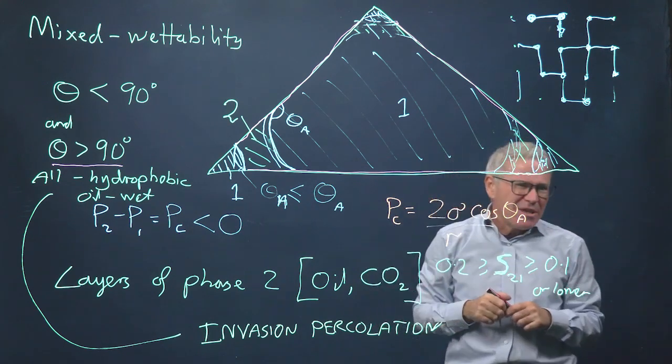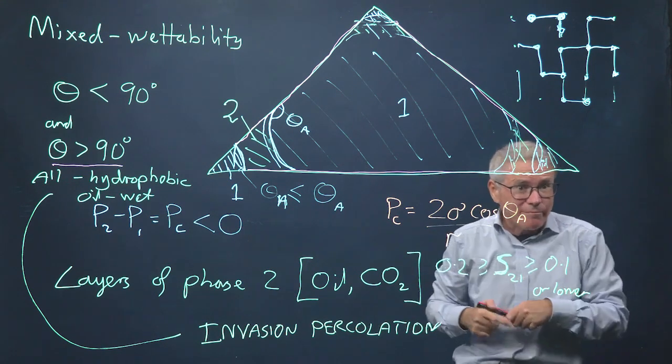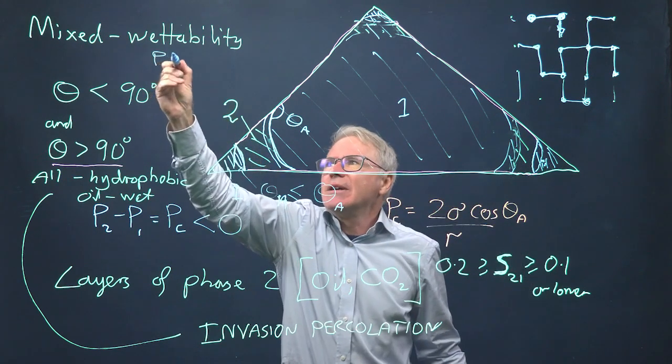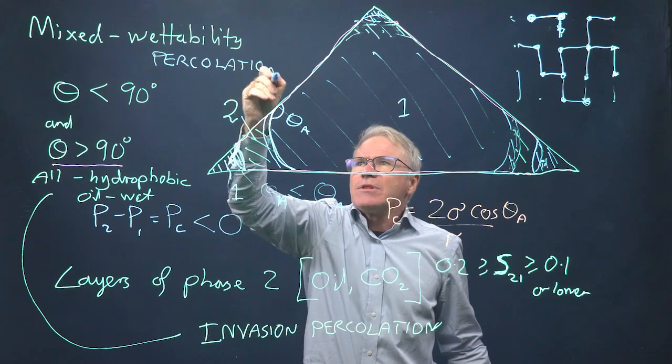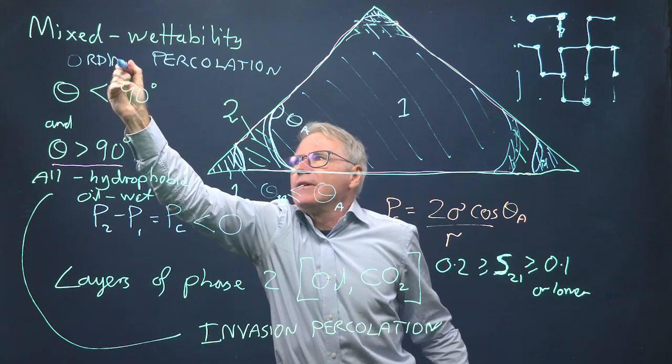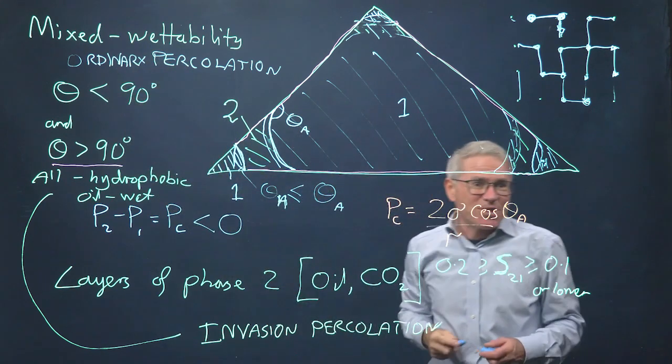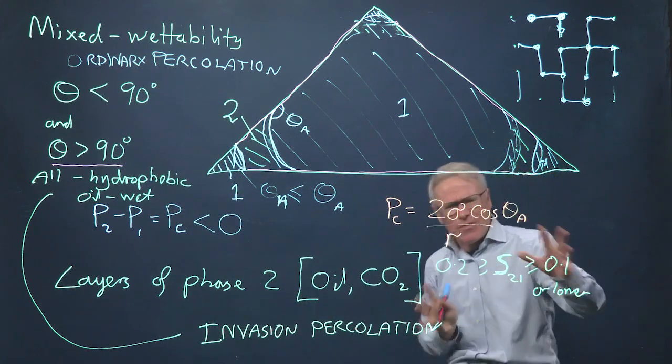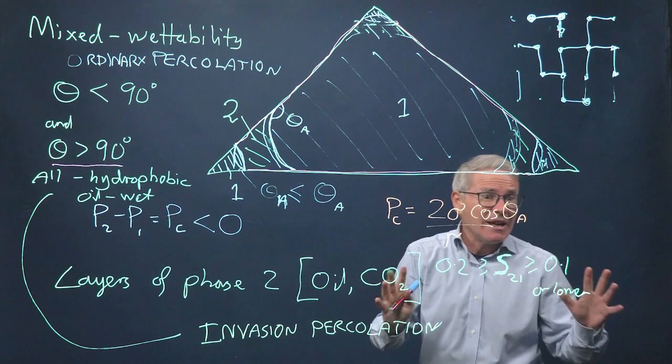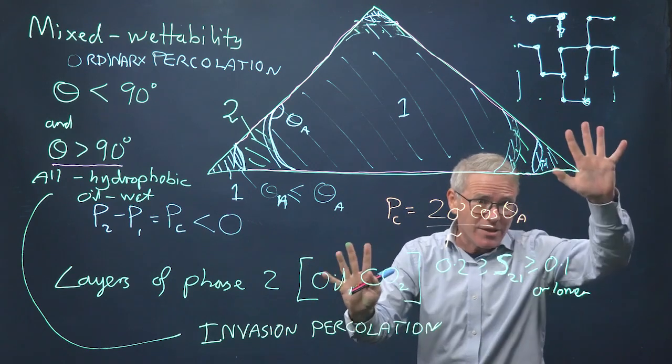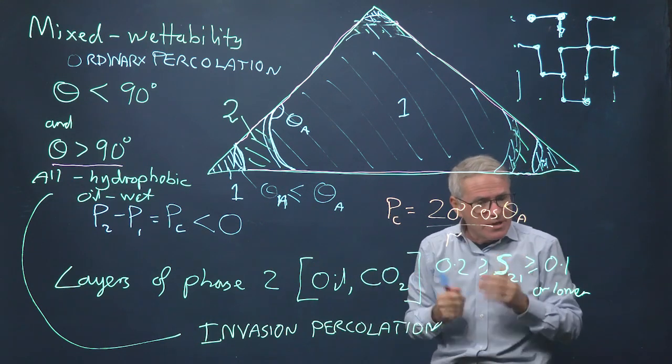So if it's mixed-wet, it's filling everywhere throughout the pore space. So in fact, if it's mixed wettability, the process is more like ordinary percolation. Now, of course, there's subtleties here. You might say, what happens if it's mainly water-wet, or maybe it's mainly hydrophobic, so there are fewer regions. So clearly, it's a mix. It's quite a complex process in real materials.